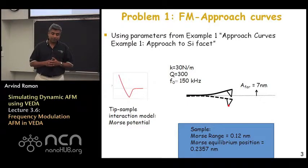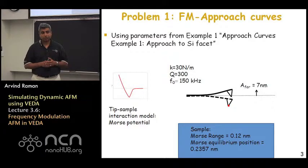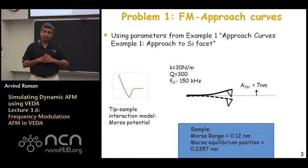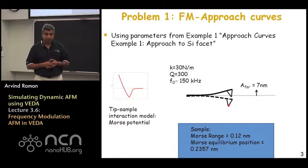The tip sample interaction model used for this simulation is going to be the Morse potential. This is a potential that is sometimes used to understand operation in vacuum conditions when you have really clean surfaces and we are able to operate at very high Q factors. The interaction forces become very, very small and these kinds of inter-atomic potentials start becoming more applicable to understand the tip sample forces under these conditions.